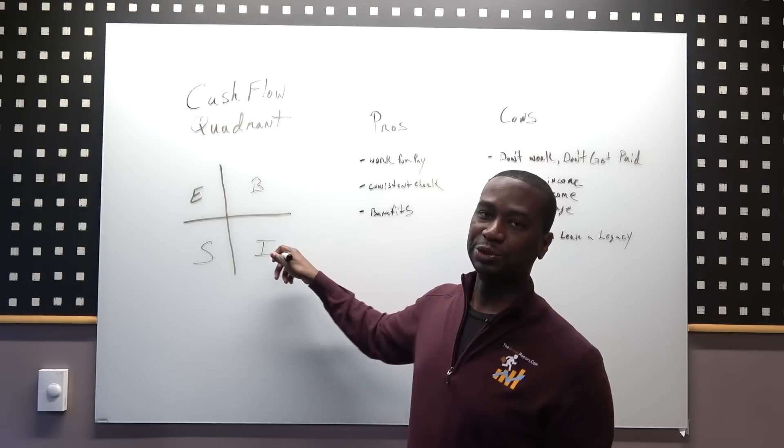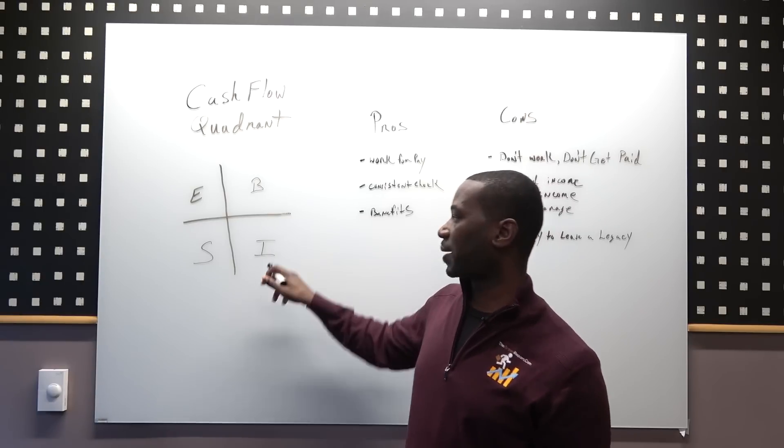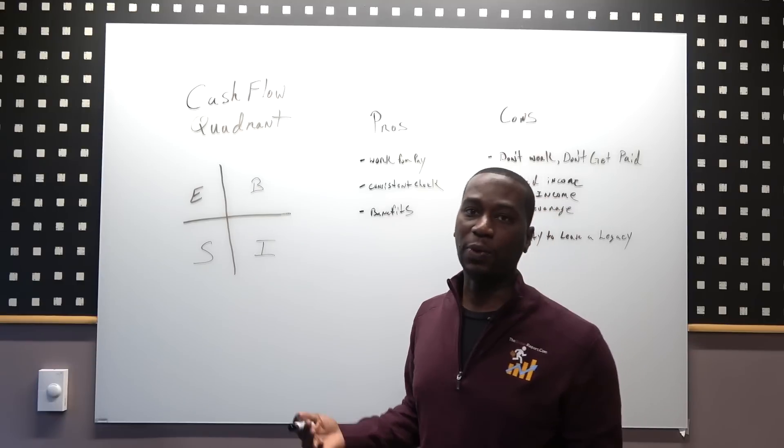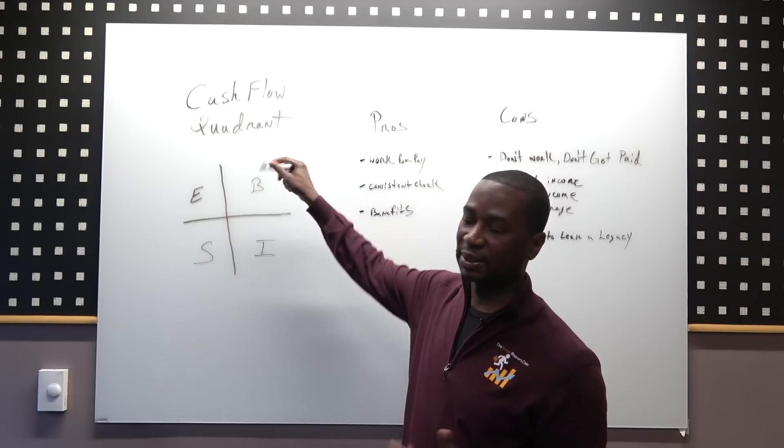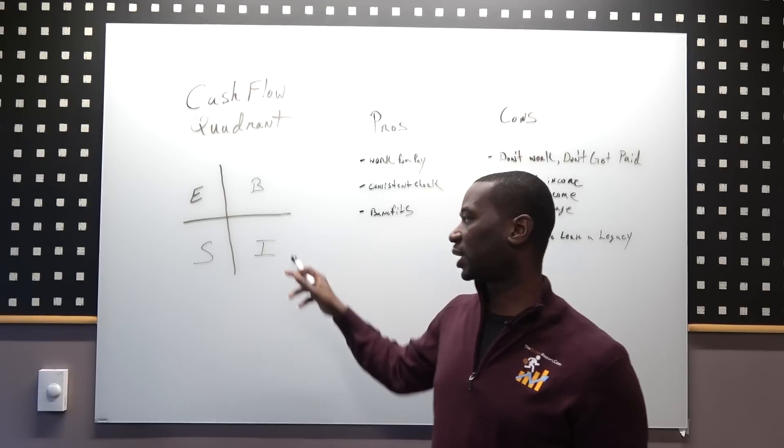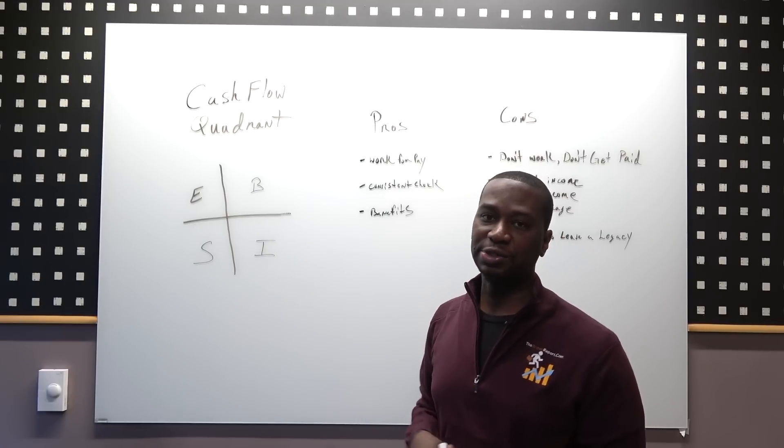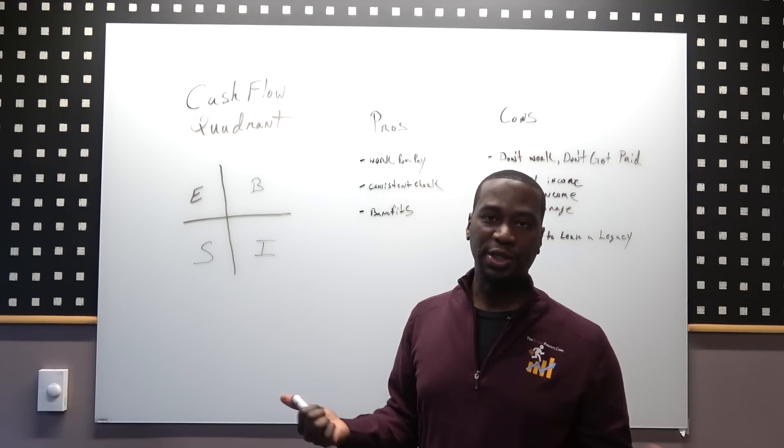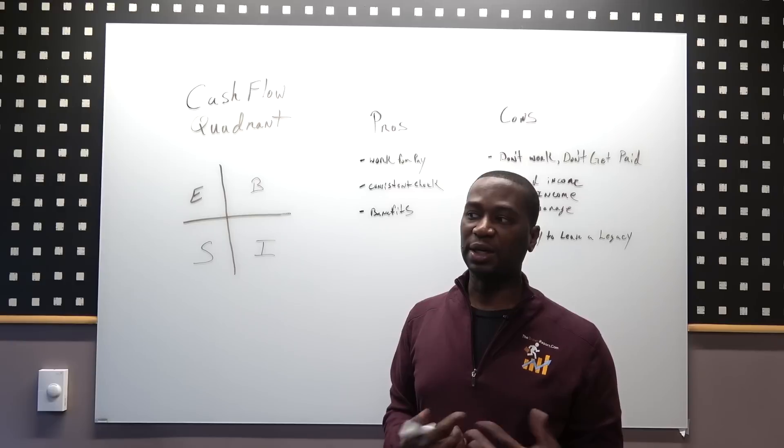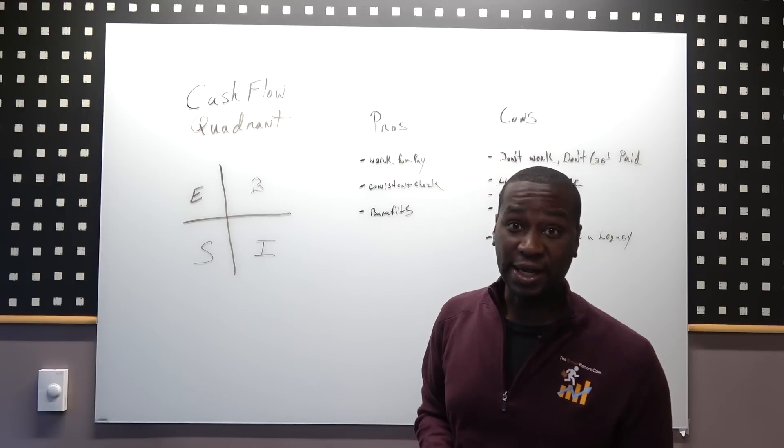These two quadrants is where the wealth is created, primarily in the I quadrant. The B and I quadrant, because these people take the income from their business and shuffle it down to the I quadrant, and their money just makes more money. That's where the term 'the rich get richer, the wealthy get wealthy' comes from.